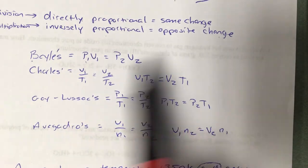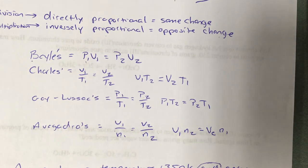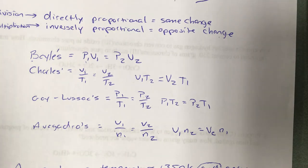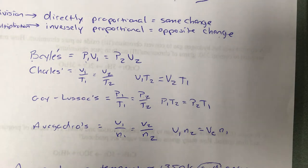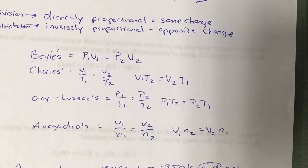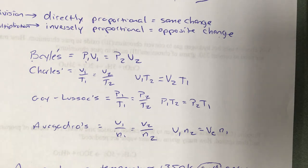As long as you use this cross-multiplying approach, the math for all four gas laws is the same. Figure out what variables you have, find the equation that matches, multiply the side with two numbers together, divide by the single number on the other side, and you have your answer. It's a very uniform way to approach it.